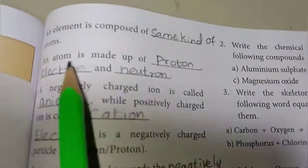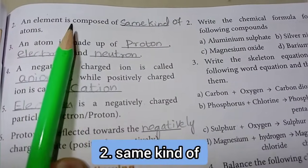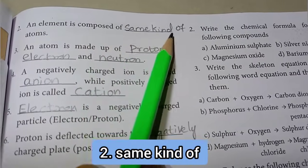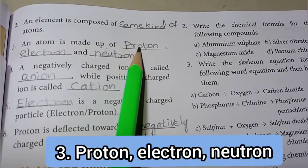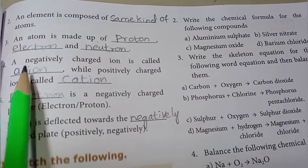Second one: An element is composed of same kind of atoms. An atom is made up of proton, electron, and neutron is the answer.